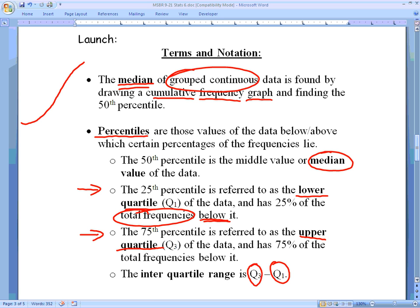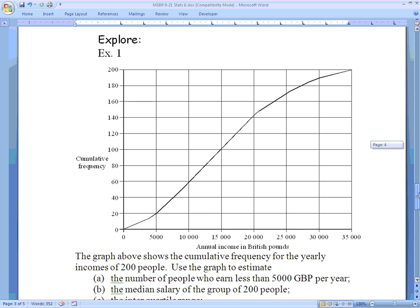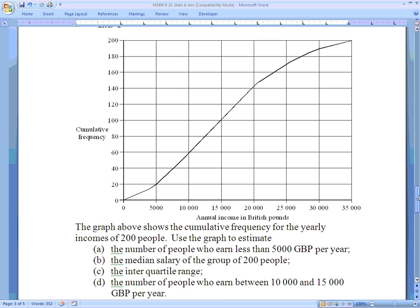We'll be looking at that in a variety of contexts both today and on future lessons. So for our one example here, we have what's called a cumulative frequency curve. Again, this is continuous data, meaning that our variable that we have here on the x-axis, the annual income in British pounds, is continuous.